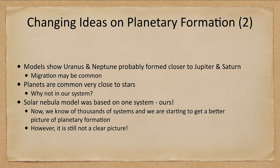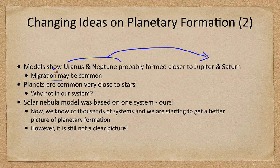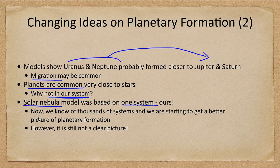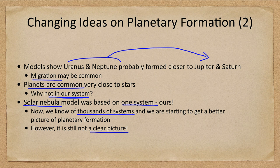Our models now show that migration may be common — even in our system, Uranus and Neptune probably formed closer to Jupiter and Saturn and then migrated outward. We know that planetary systems very close to stars are common — not just hot Jupiters but lots of planets. Why didn't that happen in our system? One problem with our model is that it was based on one system: ours. Now we know of thousands of systems and are getting a better picture, though it will take many more studies to truly understand them.